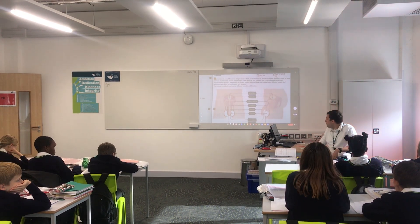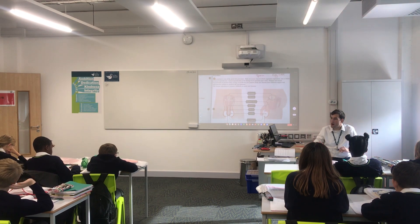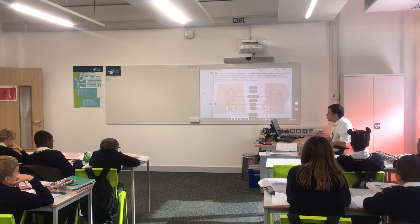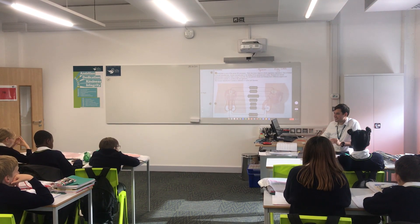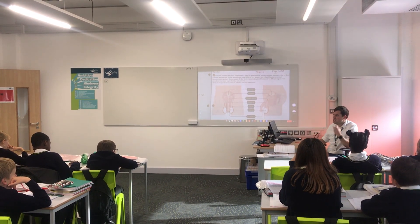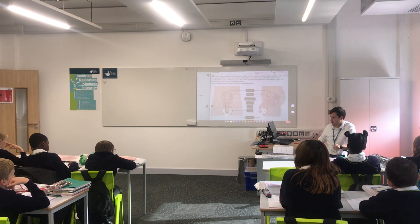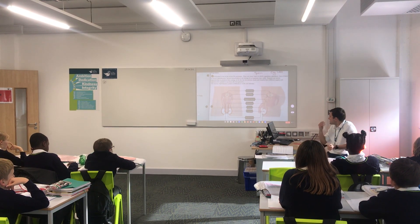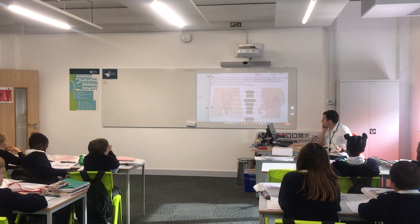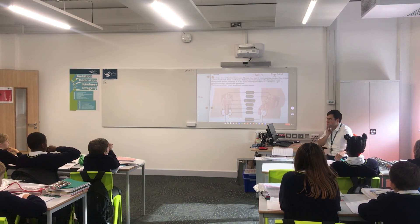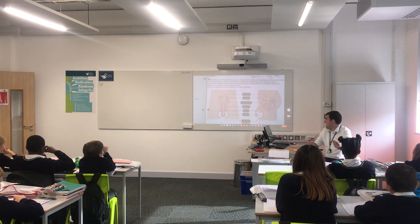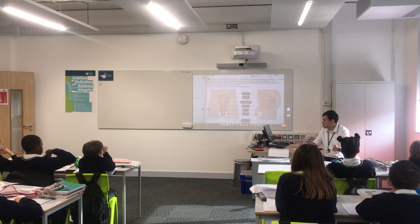Now, this is a lesson where there is the potential for some of us to be a little bit immature and silly, but I'm really confident that 7B are going to approach this in a really mature way — really seriously and really scientifically. So what we're going to do today is take a really good look at some diagrams showing the different organs involved in the human reproductive systems. That's going to take two parts, because we'll look at the male one and then the female one as well.